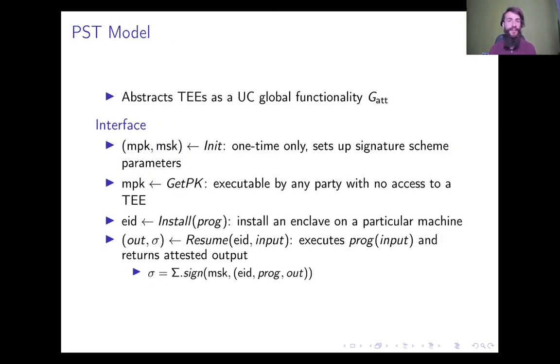The enclave also provides integrity by generating an attestation, which corresponds to some kind of cryptographic signature over the program being executed within the enclave and the output it produces. The details of the many different architectures for trusted execution environments can be nicely abstracted through the UC global functionality GATT, implemented in the PST model. It has a simple interface.